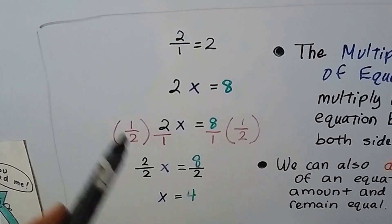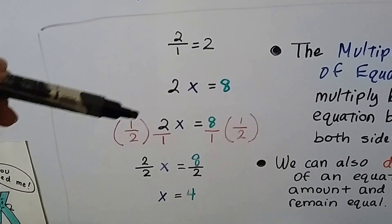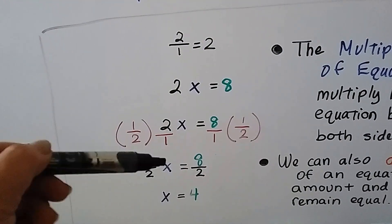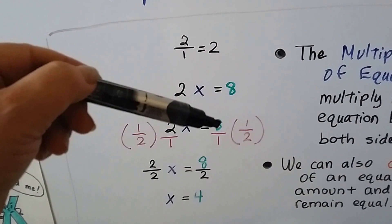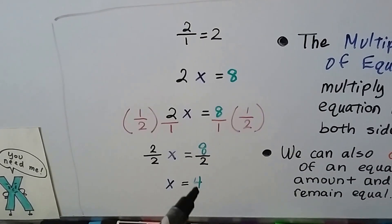So the reciprocal of 2 over 1 is 1 over 2. I'm going to multiply both sides of the equation by a half. We're going to get 1 times 2 is 2 over 2 times 1 is 2. So now we have 1x. And on this side, we're going to get 8 times 1 is 8 over 1 times 2 is 2. 8 halves is 4.